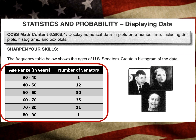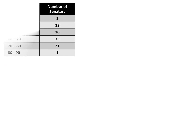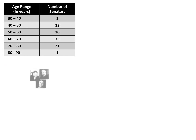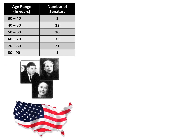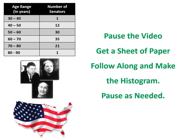Here we have all of the age ranges and the number of senators in each range. Pause the video, get a sheet of paper, follow along, and make the histogram. Pause as needed.